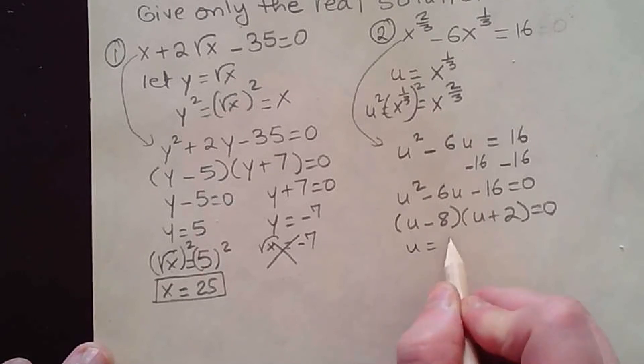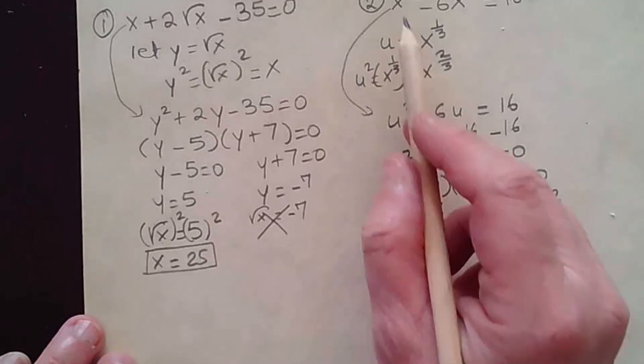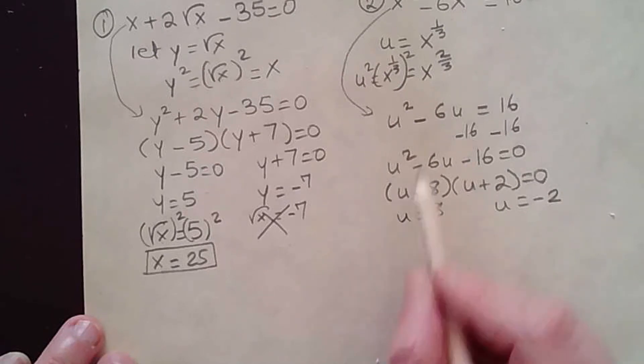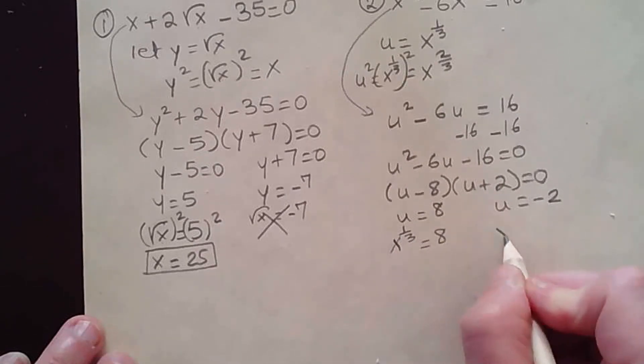So u would be equal to 8, or u equal to negative 2. Now let's go back to our original variable. Our original variable is x. So we need to replace u with x to the 1/3. So x to the 1/3 equal to 8, and x to the 1/3 equal to negative 2.